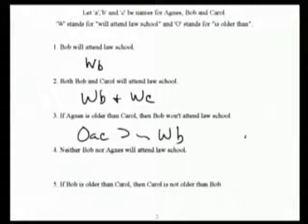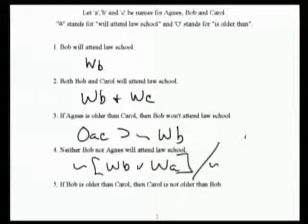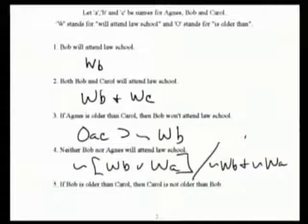Number four — I have tilde bracket WB for WRA. That works fine. What's another way of doing it? Not WB and not WA? Yes, that's equivalent. You know they're equivalent by virtue of DeMorgan as well. How one hears a sentence may reflect exactly how you write it down, but if you've got it right, these things should be logically equivalent to one another.